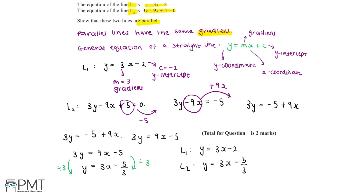To show that these two lines are parallel, they need to have the same gradient, which is given by the m value in y equals mx plus c — the number directly before the x. Looking at L1 and L2, the number before x in both equations is 3, so the gradient of both lines is 3. We've now proven these two lines are parallel. We should write: L1 and L2 are parallel because they have the same gradient; both values for m equal 3, therefore they are parallel.